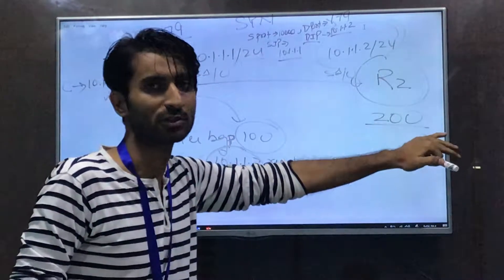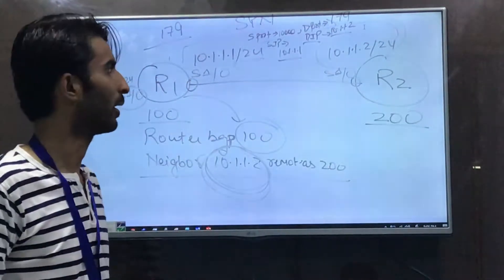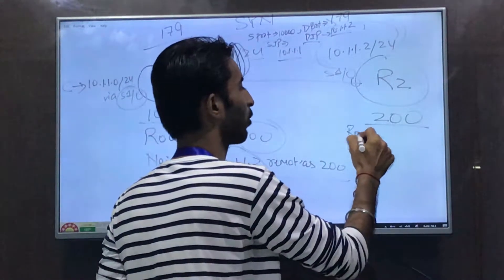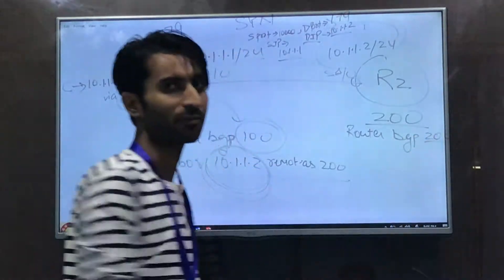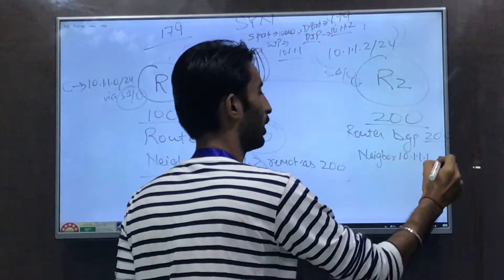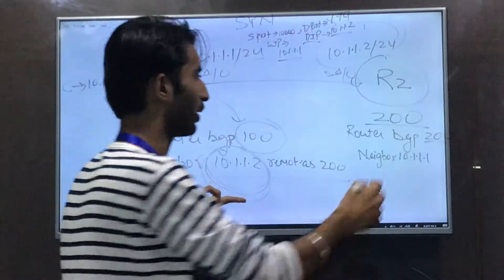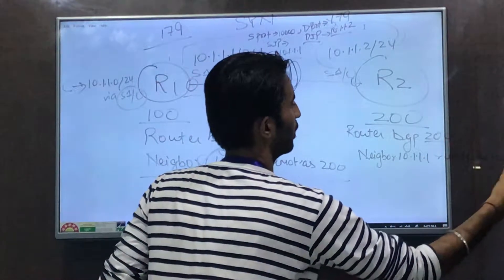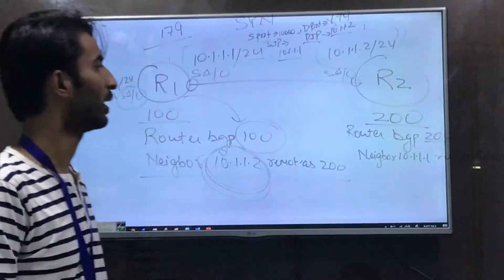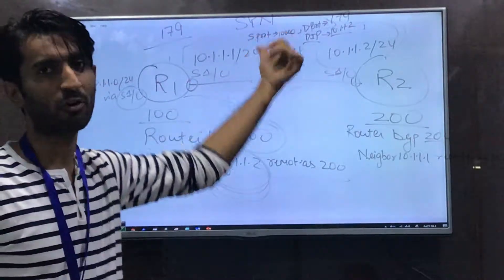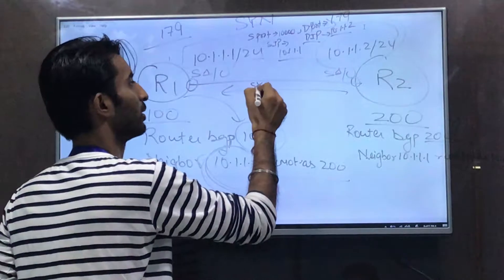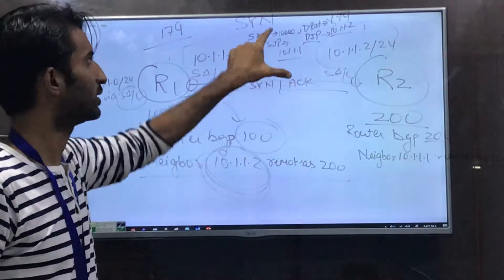Since R2 has no BGP configuration yet, it sends a TCP RST flag, resetting the connection. To fix this, we configure R2 with 'router bgp 200' and add the neighbor statement: neighbor 10.1.1.1 remote-as 100. Once this is done, R2 stops sending RST and instead replies with a SYN-ACK, completing the second step of the TCP three-way handshake.